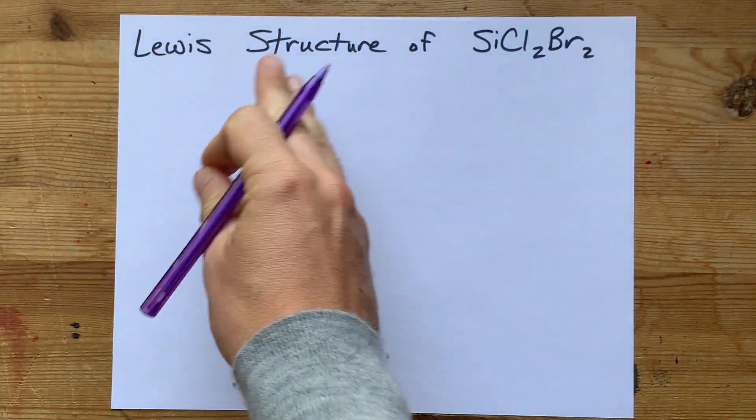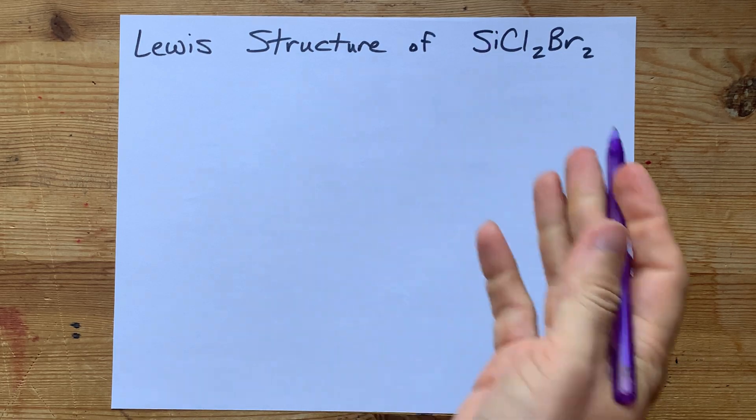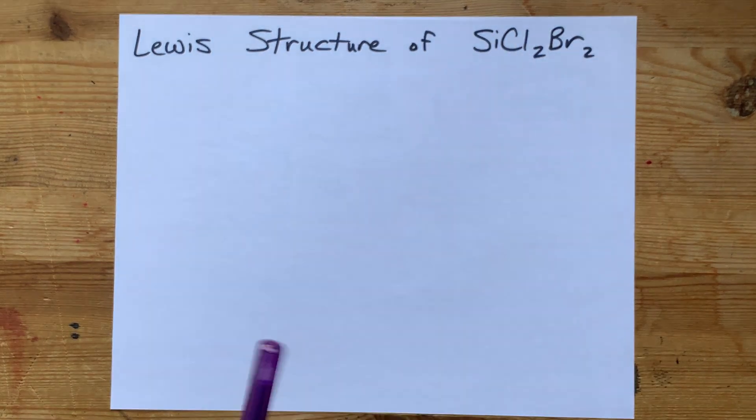I'm getting increasingly obscure Lewis structure requests. This one is dichloro-dibromosilane, a silicon with two chlorines and two bromines.